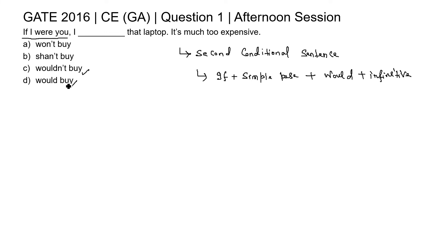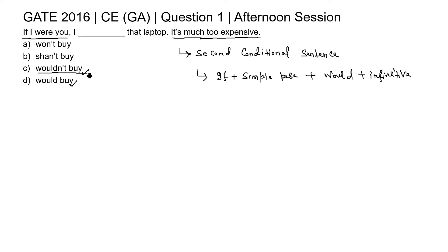'Would' appears in both option C and option D. Option C is 'would not buy' and option D is 'would buy.' Now we check the meaning: since the sentence ends with 'it's much too expensive,' it carries a negative meaning, so we select 'would not buy.'